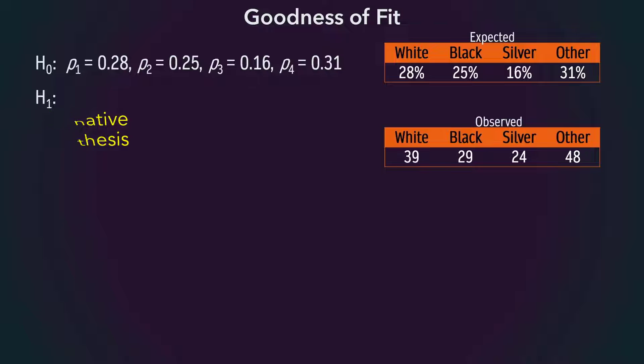The alternative would be that the null hypothesis is not true or not correct. That is, at least one of the proportions is not as specified in the null hypothesis. In other words, the observed values are not consistent with the expected distribution.